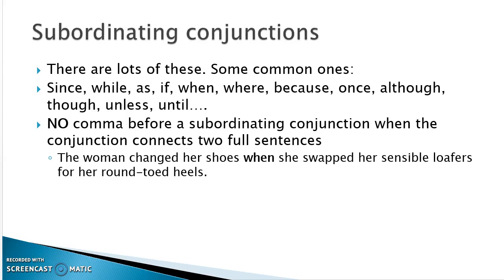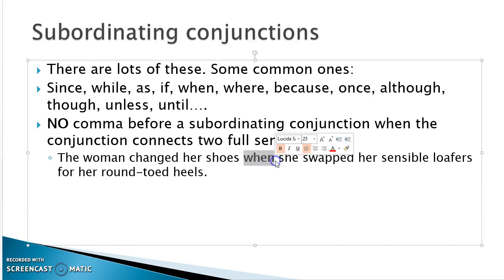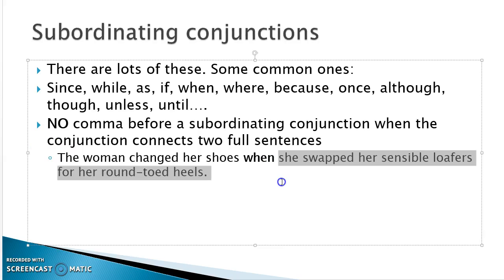Subordinating conjunctions are strong enough to hold together two full sentences by themselves. For example: 'The woman changed her shoes when she swapped out her sensible loafers for the round-toed heels.' Here, 'when' is the subordinating conjunction, with a full sentence on the left and a full sentence on the right.